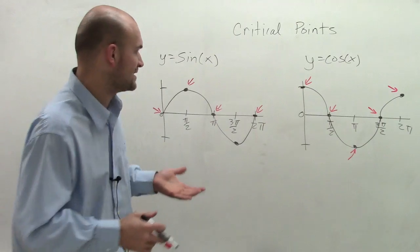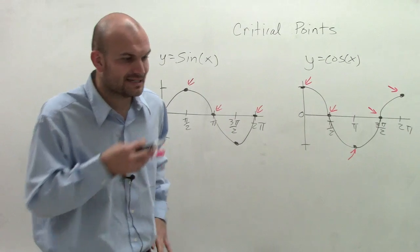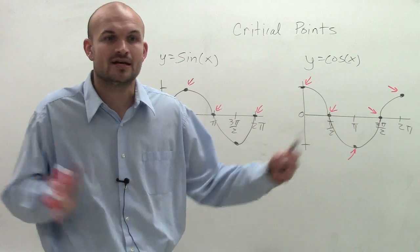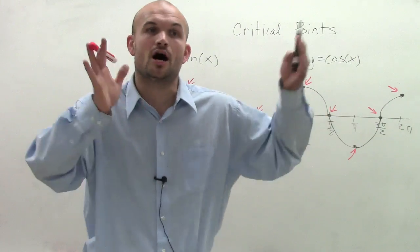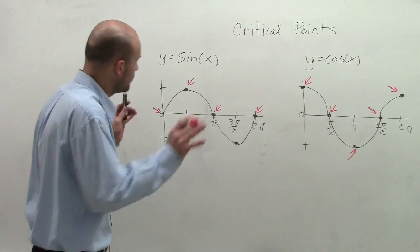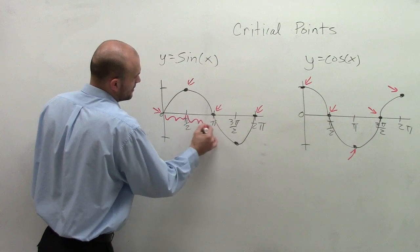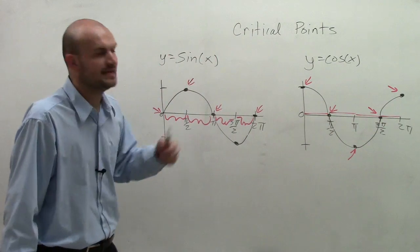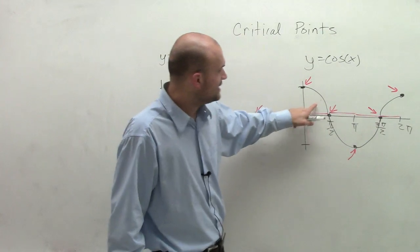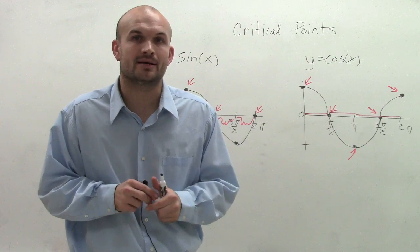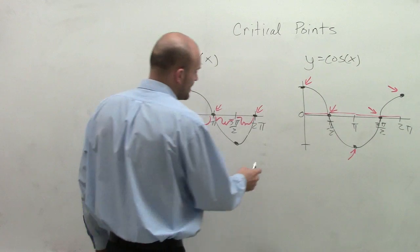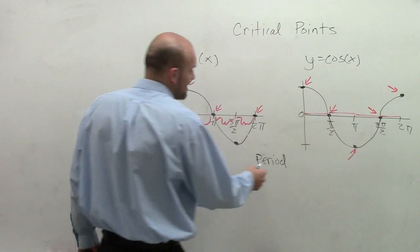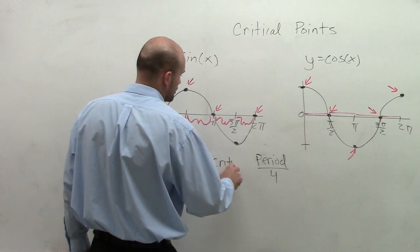What's really important about understanding the critical points is there are always going to be transformations affecting the graph. Your graph might be condensed, or stretched, or shifted up or down. So how is that going to affect where we have our critical points? The distance between each one of these critical points is the same — each section is broken up into four equal parts. So to find the distance between each critical point, I take my period and divide it by four.